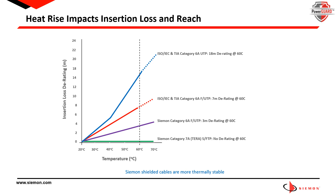There are some key cable features and characteristics that result in less heat rise and therefore less derating and bundling restrictions. First, larger conductor gauges exhibit less heat rise, which is why Category 6A and 7A exhibit less temperature rise than Category 5E or 6. Secondly, overall shielded cabling offers better heat dissipation — in fact, shielded cables exhibit half of the heat buildup of UTP. And finally, cables with a higher operating temperature, like Siemens' 75°C-rated Category 6A and 7A cables, are more thermally stable and offer better heat dissipation.